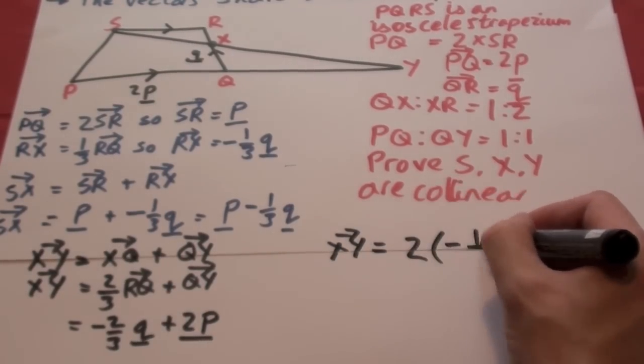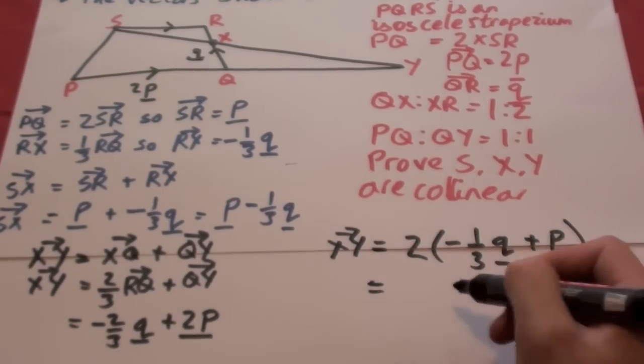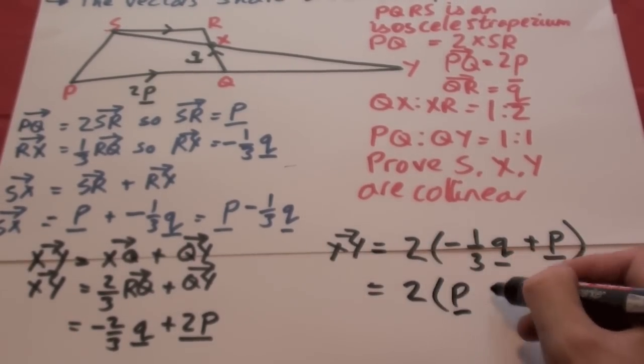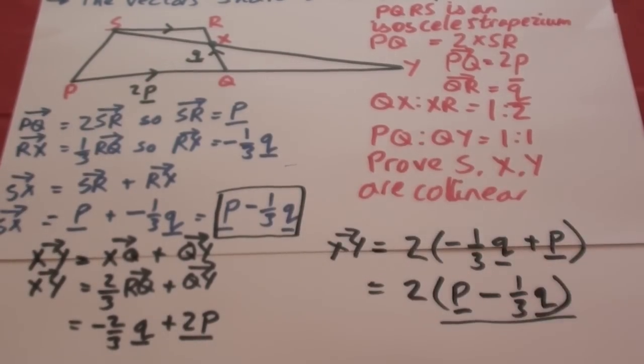So X to Y, if I take on a common factor of two, is minus one third Q plus P. If I do a little bit of rearrangement, this becomes P minus one third Q. This is exactly the same as the vector we found.